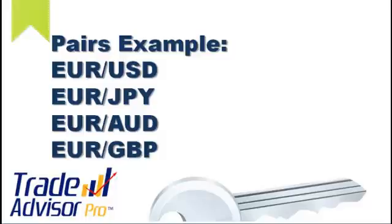So going back to what we talked about: 2% risk maximum per trade, 5% maximum risk at once across all your trades, and no more than two like-minded pairs at once. It's very, very important.